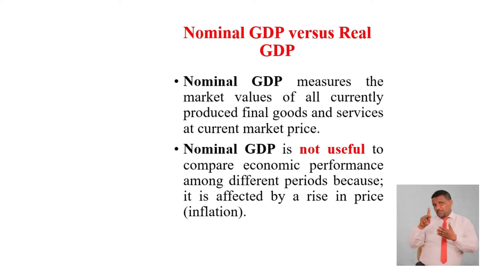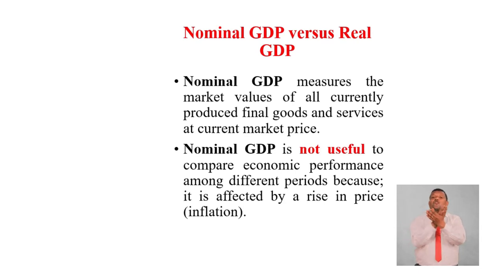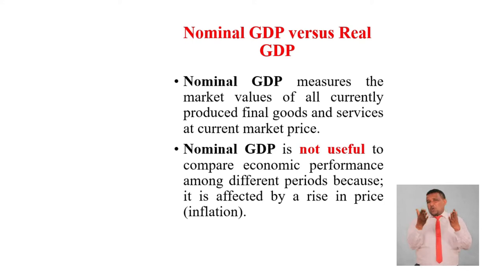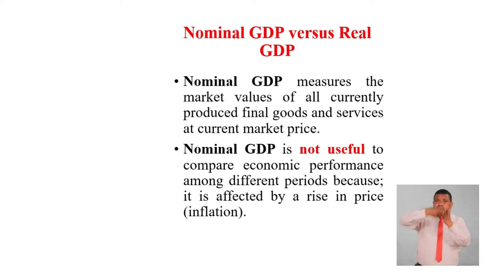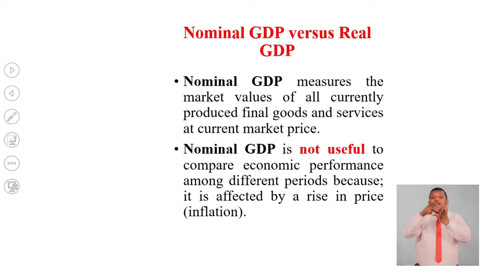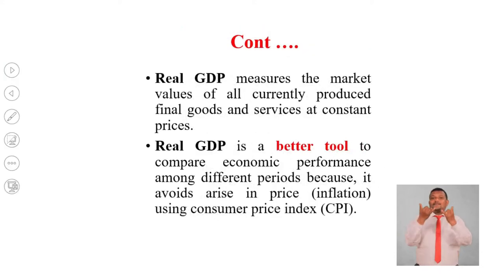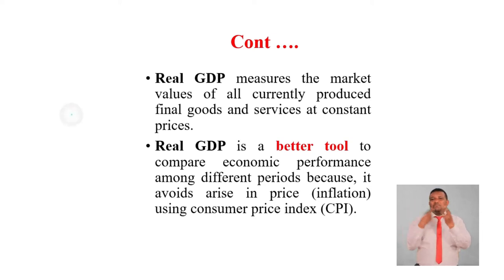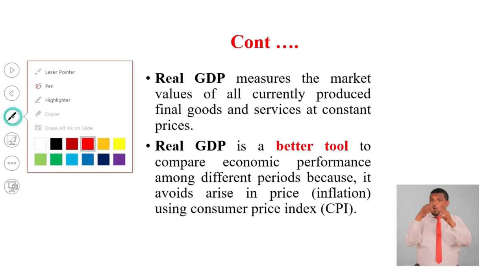Nominal GDP measures the market values of all currently produced final goods and services at current market prices. Nominal GDP is not useful to compare economic performance among different periods because it is often affected by a rise in price, or inflation. Even though there is no production, if there is a rise in price of goods and services, since it is measured by current market prices, there is a rise in the nominal GDP. Hence it is not useful to compare economic performance among different periods.